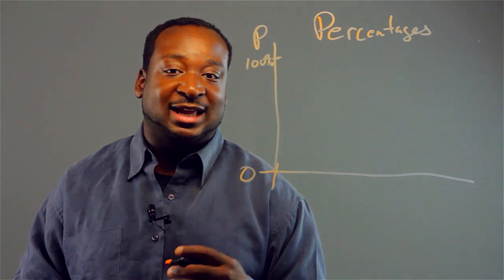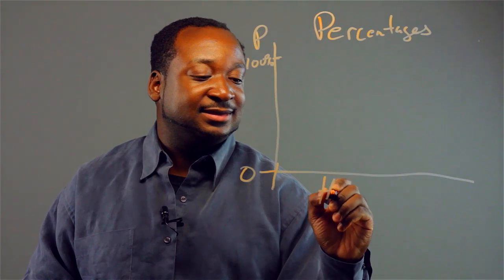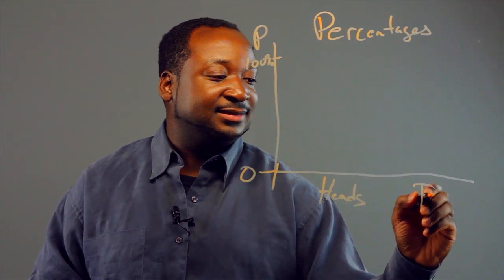And we can take something simple like flipping a coin. A coin has two sides, heads, and tails.